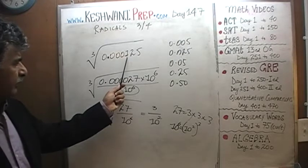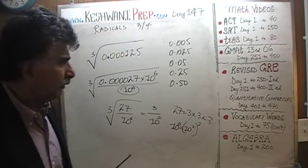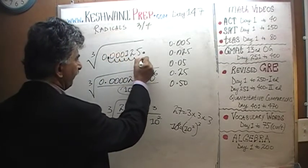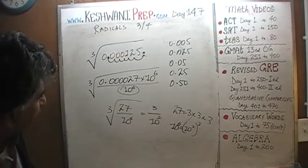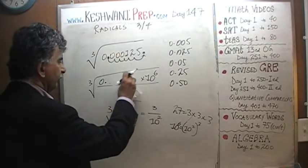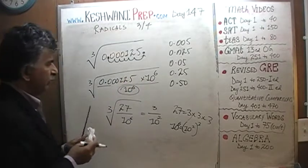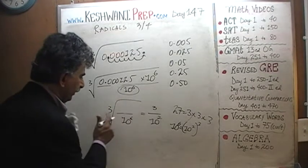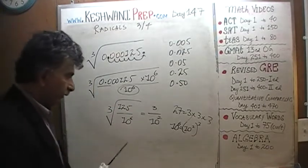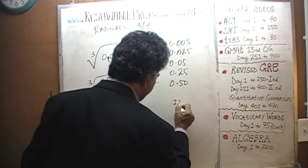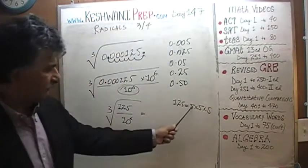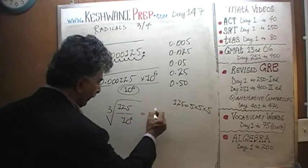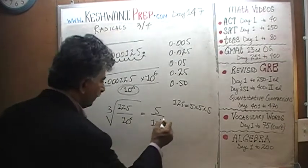One more time — we need to get 0.000125 into the whole number 125. We want the decimal to end up after 125, so we need to move it six places. We take our quantity 0.000125 and multiply top and bottom by 10^6. The decimal moves, the top becomes 125, and the cube root of 125 is simply 5 × 5 × 5, so the cube root of 125 is 5. The cube root of 10^6 is 10^2, so the answer is 5 over 100.